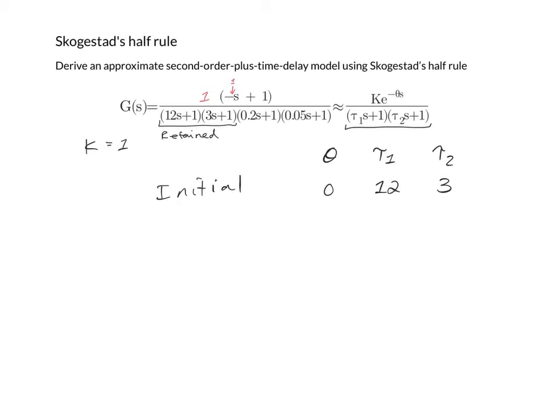I've written down the neglected time constants in rows of their own so that we can fill in our table. We also need to take into account the right hand plane zero which has a time constant value of minus one.